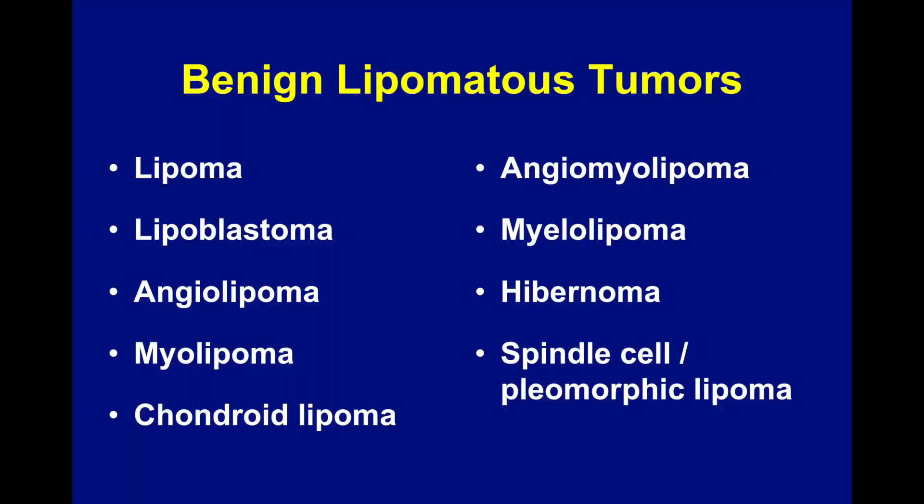Quickly, I just wanted to give an overview of the WHO classification of lipomatous tumors. This classification goes back to, I think, 2013. The new WHO soft tissue classification will be coming out in the coming year, but until then I'll be using basically the 2013 classification, although it's very similar. This is a list of the benign lipomatous tumors that one encounters. Fortunately, about 95% of all fatty tumors that we see are just run-of-the-mill lipomas, and you really don't have to give the case much of a second thought.